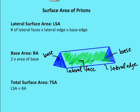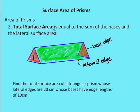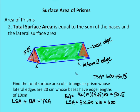Let's solve an example: find the total surface area of a triangular prism whose lateral edges are 20 centimeters and whose bases have edge lengths of 10 centimeters. First, we find the lateral surface area. It is 20 × 10 — the area of one face — times 3, which gives us 600 centimeters squared.